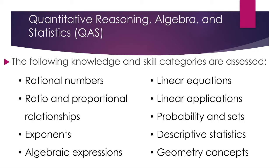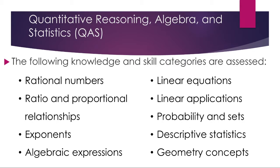We're going to first look at Quantitative Reasoning, Algebra, and Statistics. This is more of the basic math portion. You're going to be looking at things you possibly would have learned in algebra and geometry — topics like rational numbers, ratio and proportions, exponents, basic algebraic expressions, some linear equations, some applications, some basic pieces from probability or descriptive statistics, and some general geometry concepts. So things that you would have learned at the beginning of your high school career.